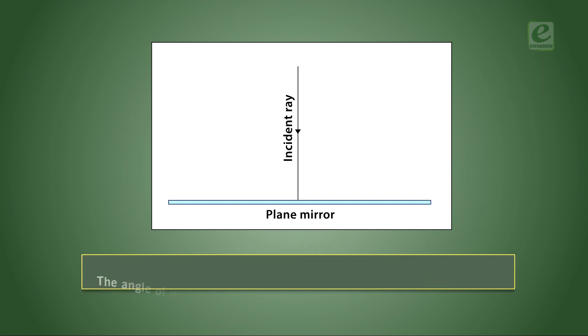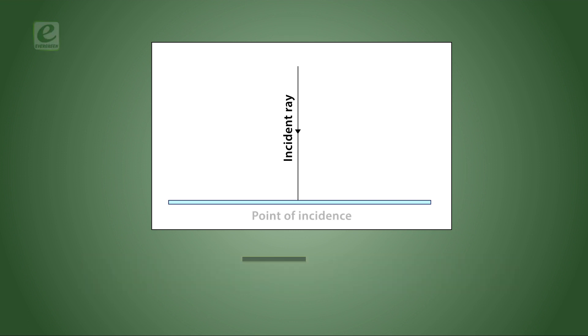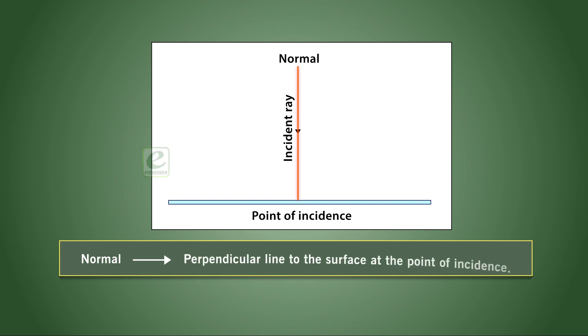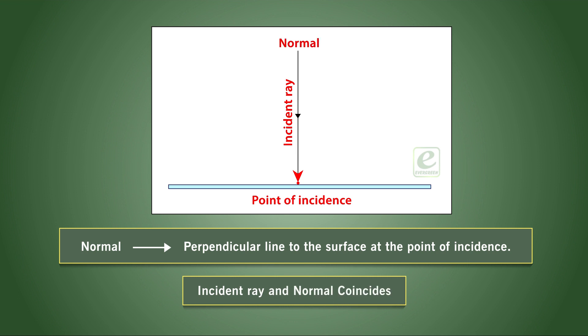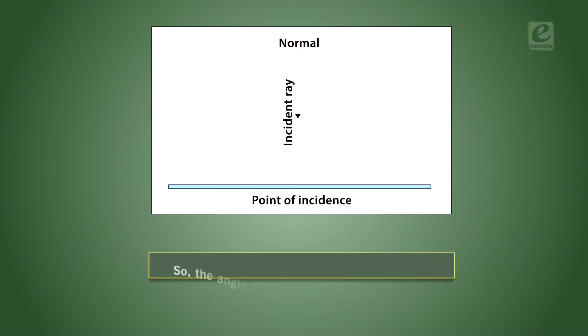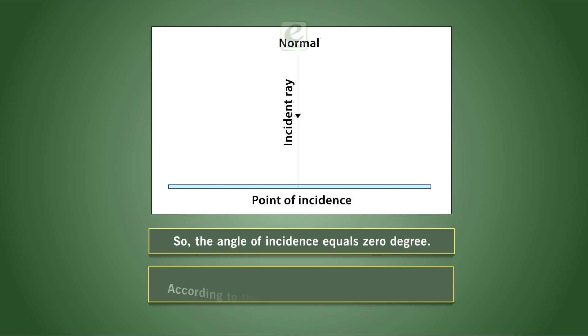We know that the angle of incidence is the angle between the incident ray and normal. And normal is a perpendicular line to the surface at the point of incidence. In this case, the incident ray is perpendicular to the point of incidence and coincides with the normal. So, the angle of incidence equals zero degrees. According to the law of reflection, the measure of the angle of reflection is also zero degrees. Hence, the reflected ray will travel in a direction opposite to the incident ray.